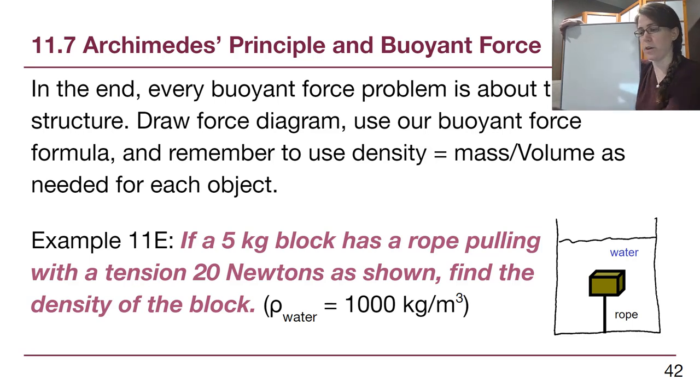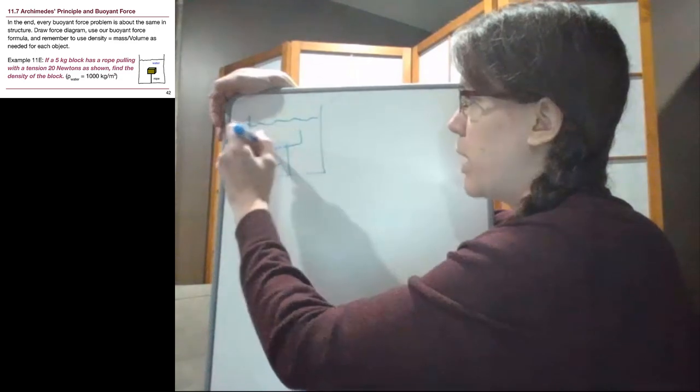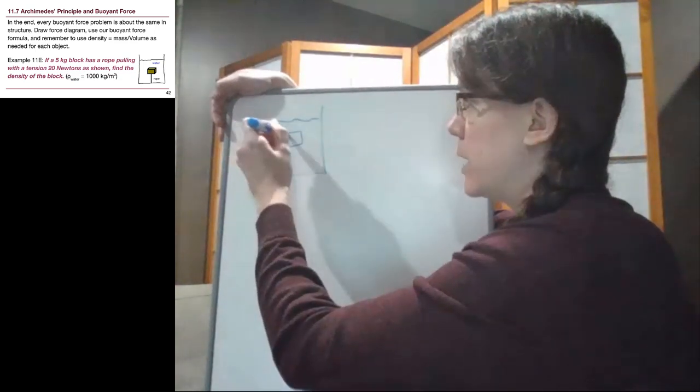So we have a five kilogram block here, and we can start to draw the situation. We have this container of water, we have this block itself, and we're told that it's five kilograms.